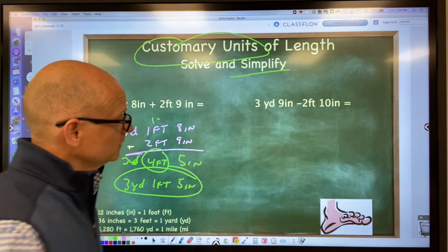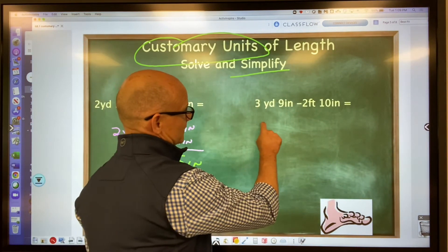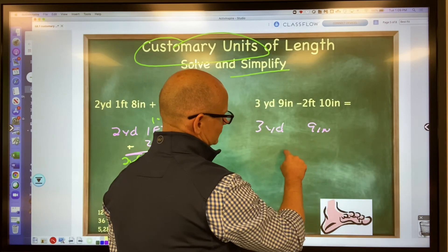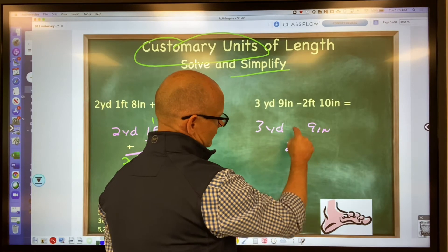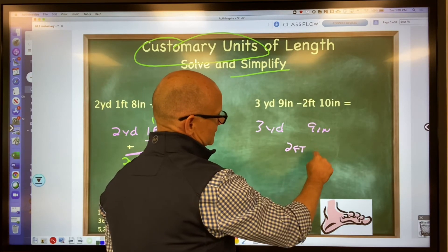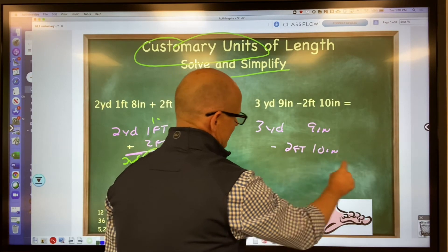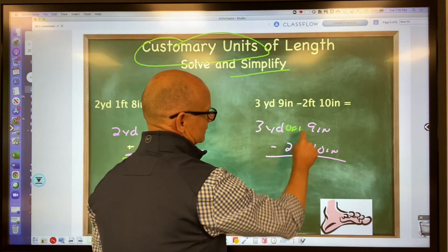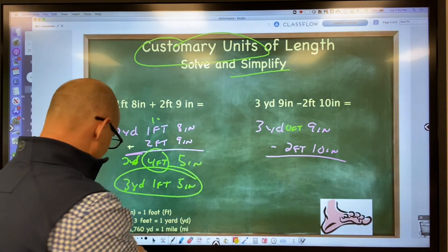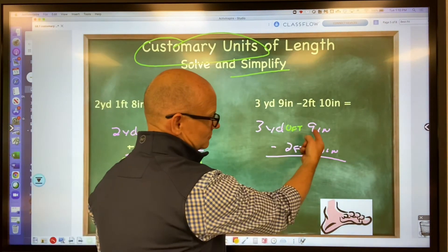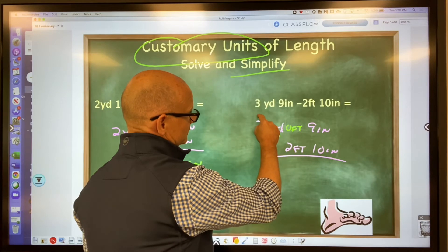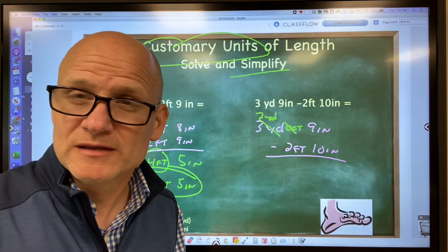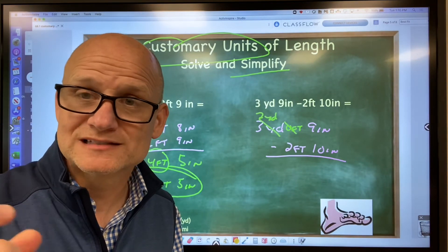Let's look at this one. I'm going to line up our units correctly. I have three yards, nine inches. I'm going to put my two feet right here because I don't have any feet here. Then 10 inches. I'm going to take 10 inches from nine inches, so I'm going to borrow. You have to be careful - you're not borrowing one and adding 10 because it's not a base 10 system.